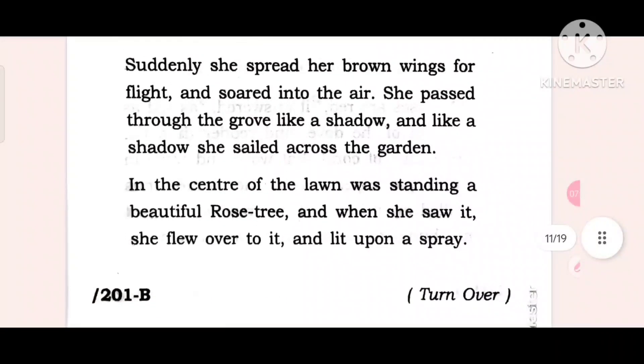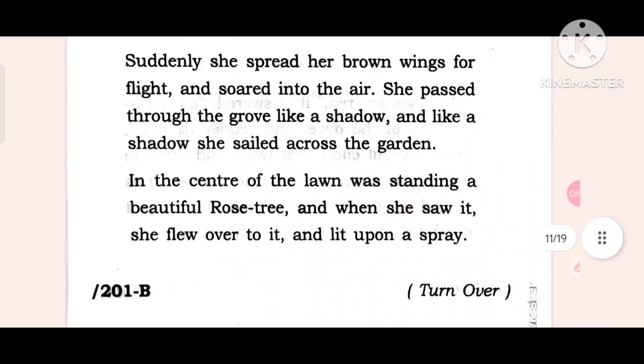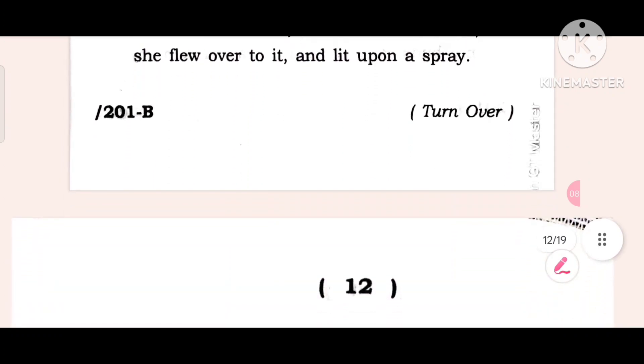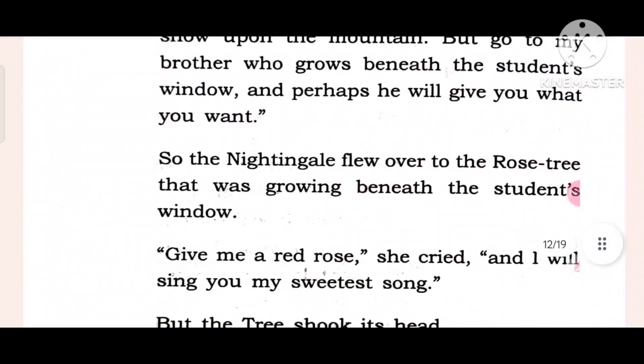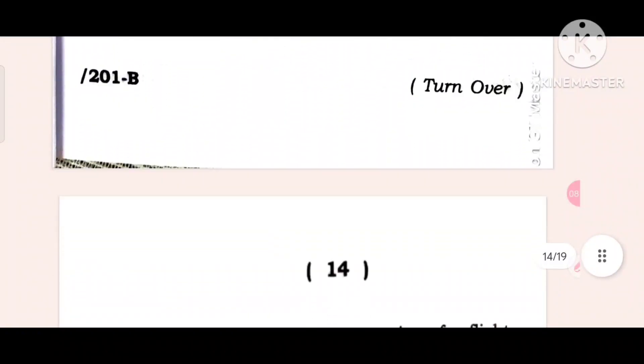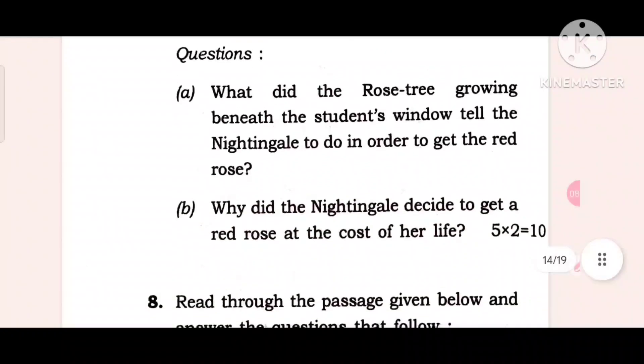Read the following extract from the prescribed text and answer the question in about seventy words. This is the passage from the non-detailed study, prose and poetry. For this part, this is the passage: 'Suddenly she spread her brown wings for flight and soared into the air. She swept through the grove like a shadow and sailed across the garden.' This is the nightingale and the rose story. You answer two questions out of four. Two questions, five marks.